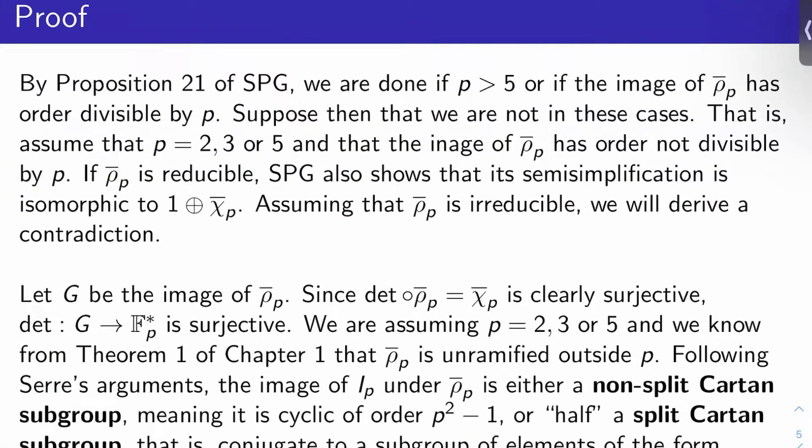Then rho P bar is either surjective or it's reducible with semi-simplification isomorphic to 1 direct sum chi P bar, the mod P cyclotomic character. For the proof, let me give you the general strategy and then some setup. By Proposition 21 of Serre's Galois properties of points of finite order paper, we're just done immediately if P is bigger than 5 or if the image of rho P bar has order divisible by P. So let's suppose we're not in these cases.